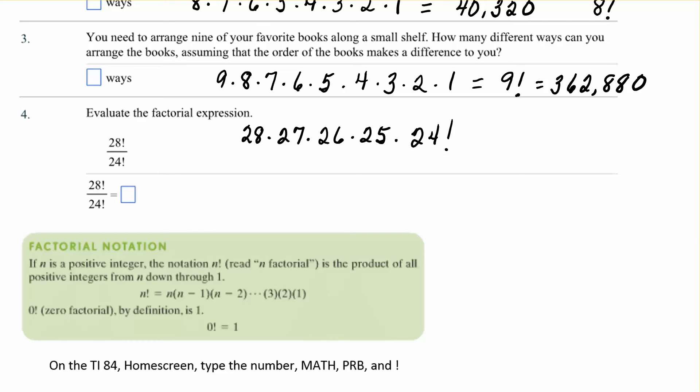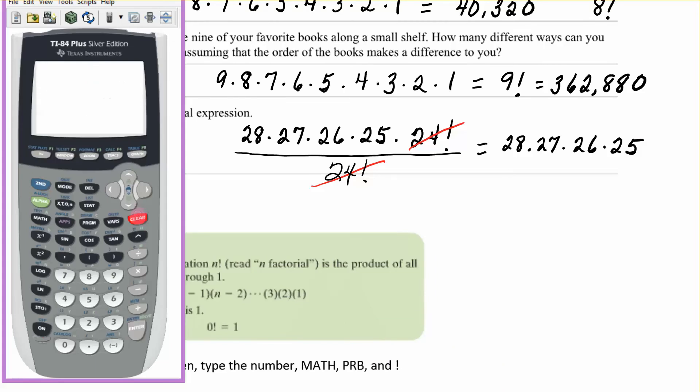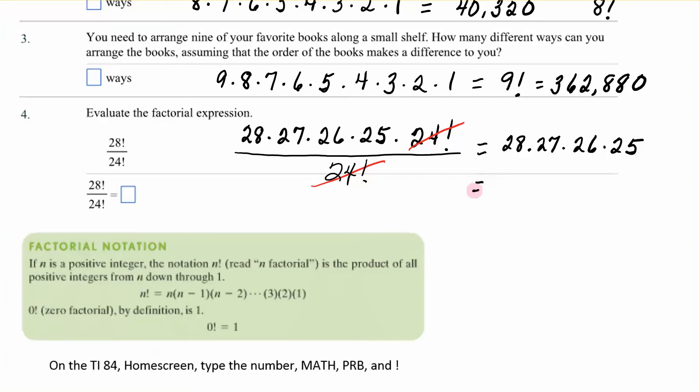So there was no reason to write out the 24 all the way down to 1, I just called it 24 factorial. And now that is divided by 24 factorial, and now those divide out. So this is much easier to handle because it is 28 times 27 times 26 times 25.